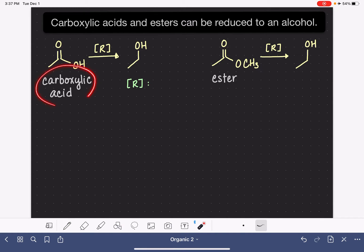For the reduction of a carboxylic acid or an ester, our only option is to use the lithium-aluminum hydride reagent, step one, followed by water, step two. This is the only reducing agent that is powerful enough or strong enough to allow for this sort of transformation.